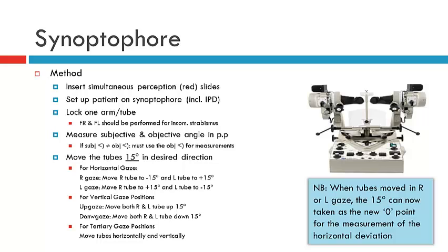Last semester we learned how to assess the patient in primary position, but we can actually move the synoptophore into nine positions of gaze by moving the tubes into various positions. Generally we'll move them 15 degrees from the primary position — for example, 15 degrees into right gaze and then 15 degrees up or down to represent dextral elevation and dextral depression.